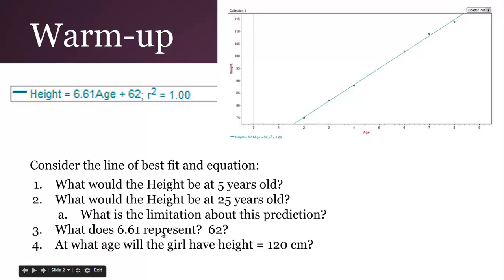What does 6.61 represent? That's the slope of the line. This is in the form y equals mx plus b, so we've got the slope and the y-intercept. Slope means for every age increase by one unit, so every year they go up, you get 6.61 centimeters higher.